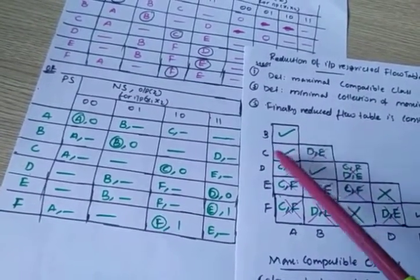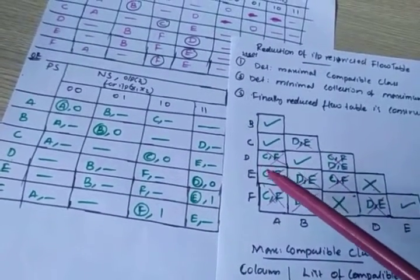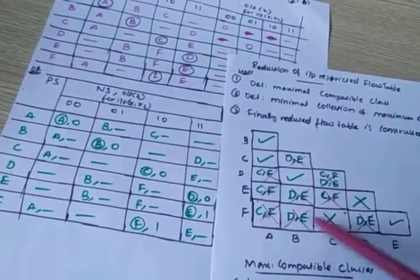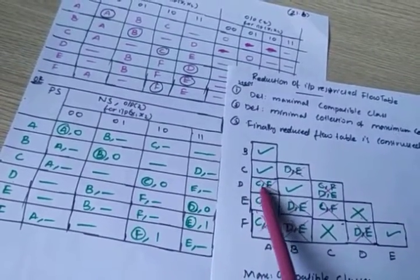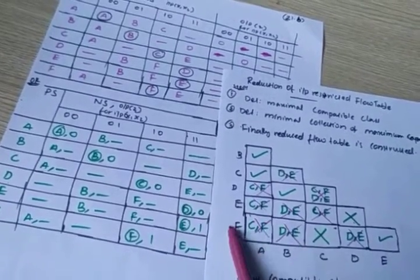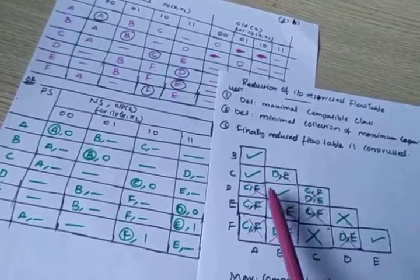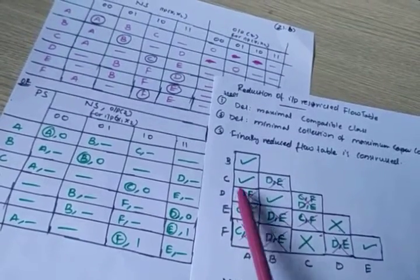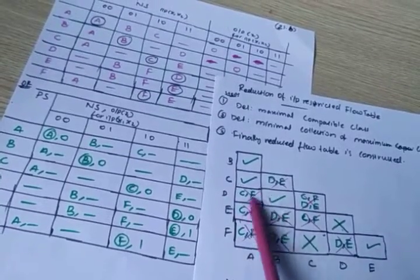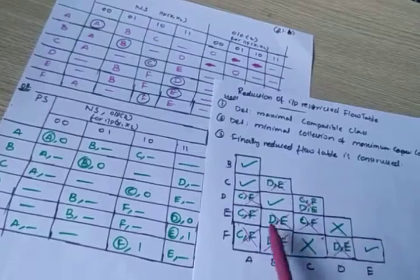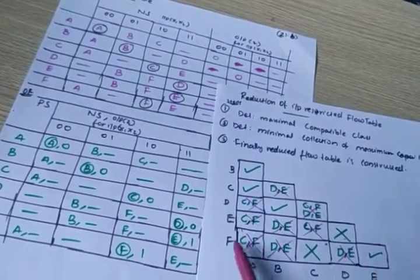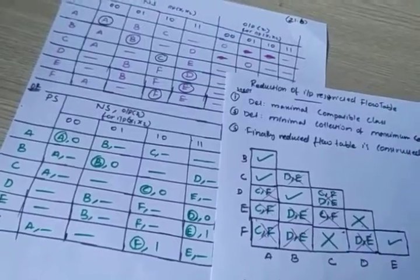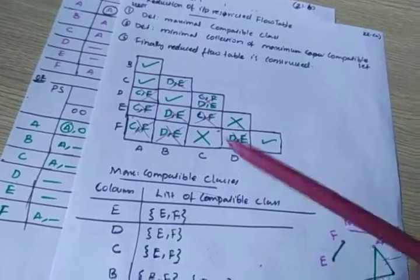In the second pass, you have to check the remaining columns that don't have a tick or cross mark — the columns with letters remaining. Consider A-D: it has C,F written. Check the C-F column — C-F is crossed. So wherever C,F is written, those columns get a cross mark. Similarly, consider D,E — D,E is also crossed, so remaining D,E columns are also crossed. This completes the second pass and the full implication chart analysis.